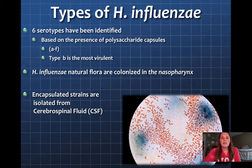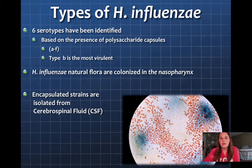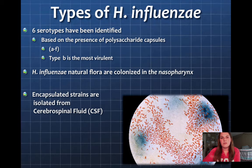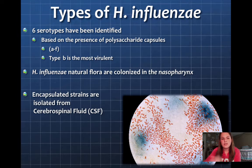Haemophilus influenzae is naturally colonized in the nasopharynx. However, when it leaves this area, it becomes invasive and can cause all sorts of diseases. In this image, we can see the encapsulated strains isolated in cerebrospinal fluid.